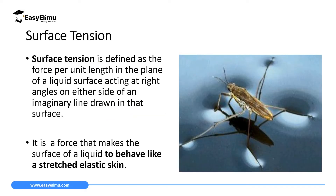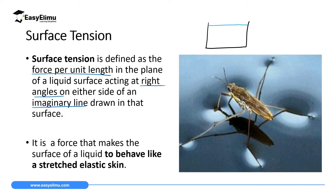Surface tension is defined as a force per unit length in the plane of a liquid surface, acting at right angles on either side of an imaginary line drawn on that surface. For example, if you have a beaker containing water up to a certain level, the particles on the marginal line where the water has reached will receive an inward force which is perpendicular — 90 degrees — to the marginal line drawn on the surface.